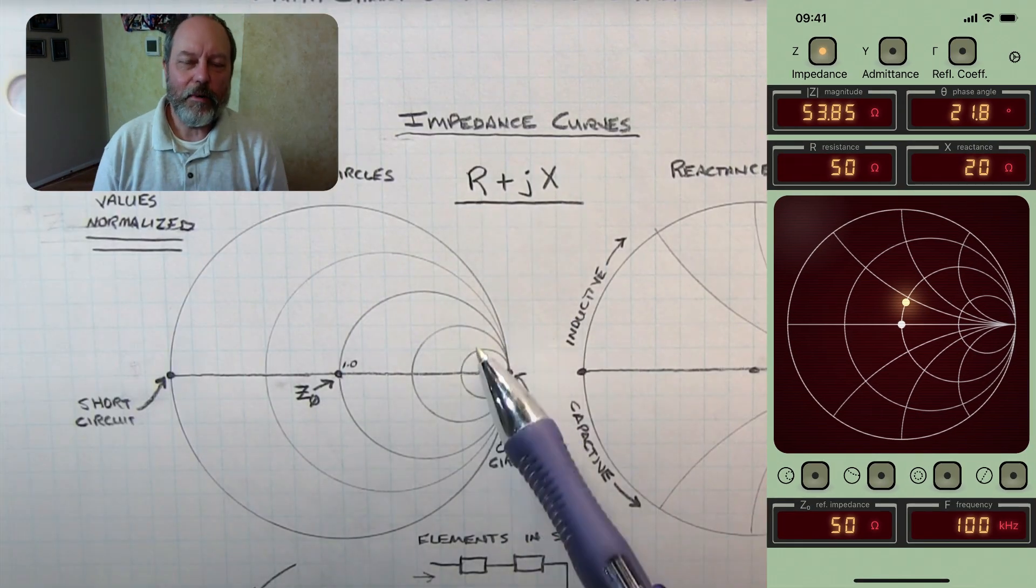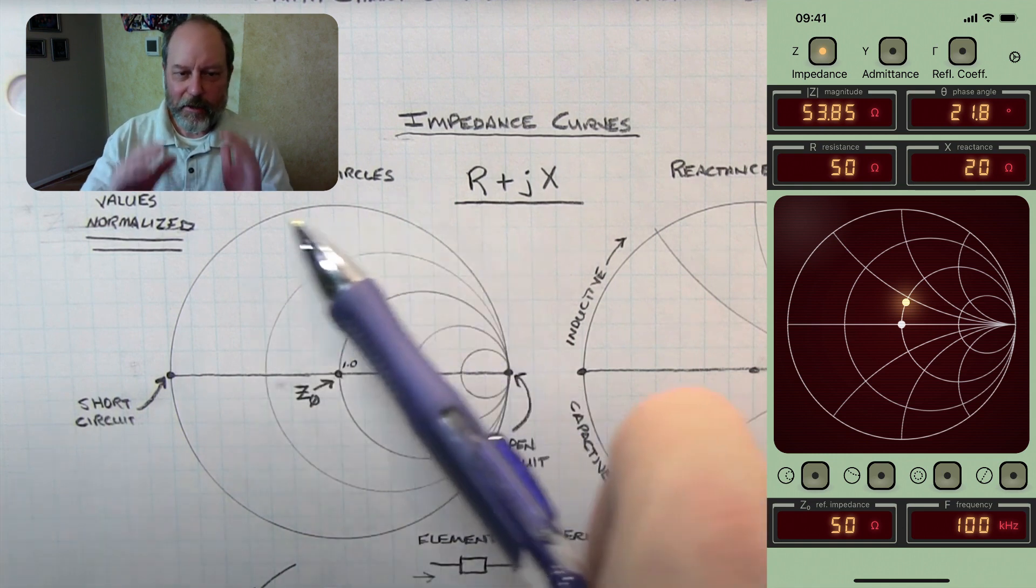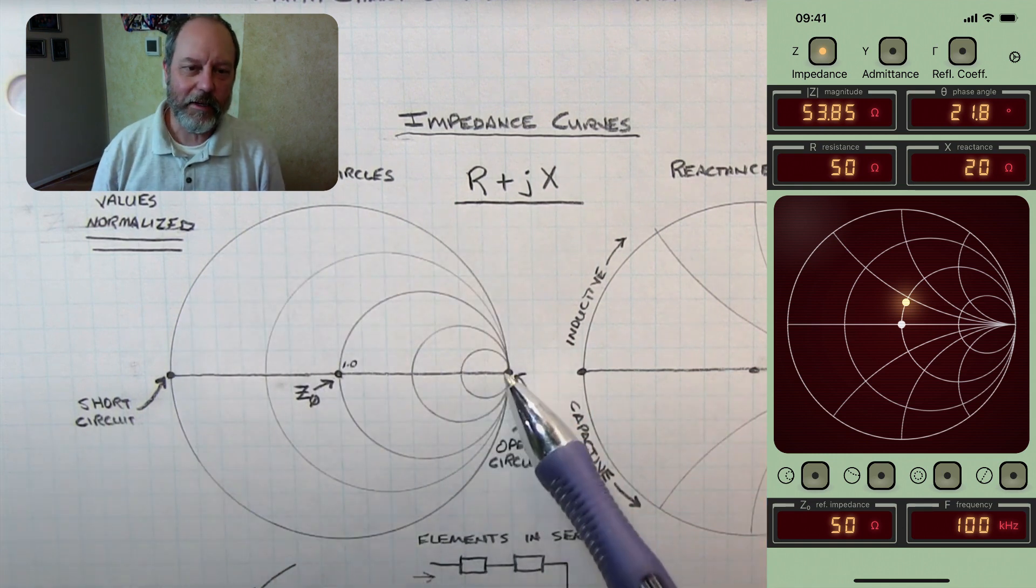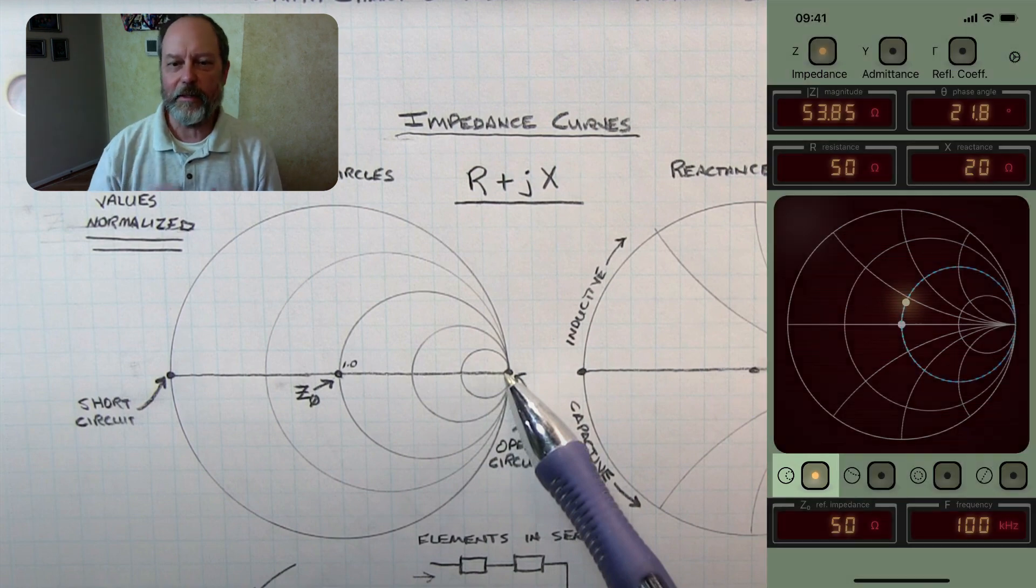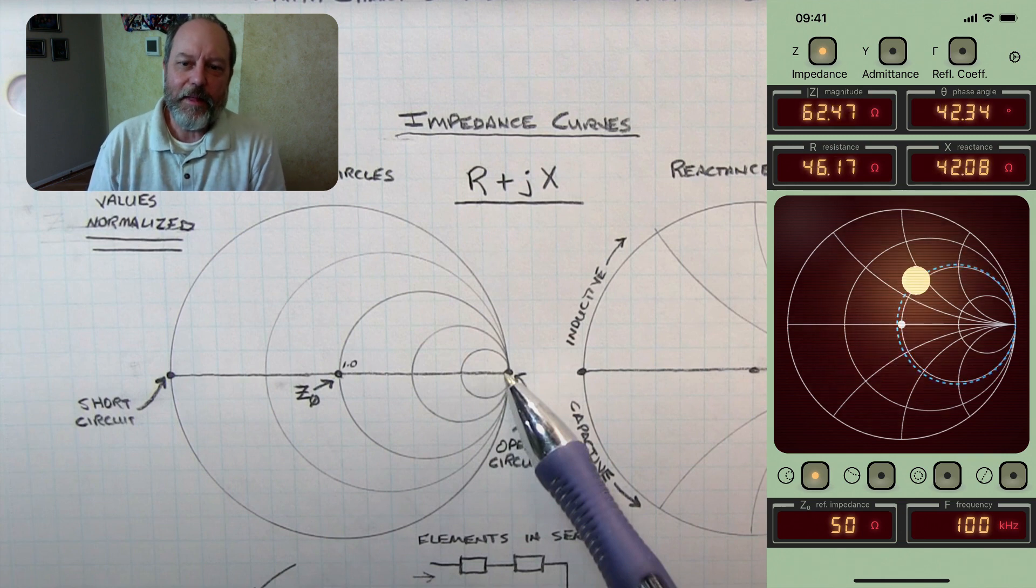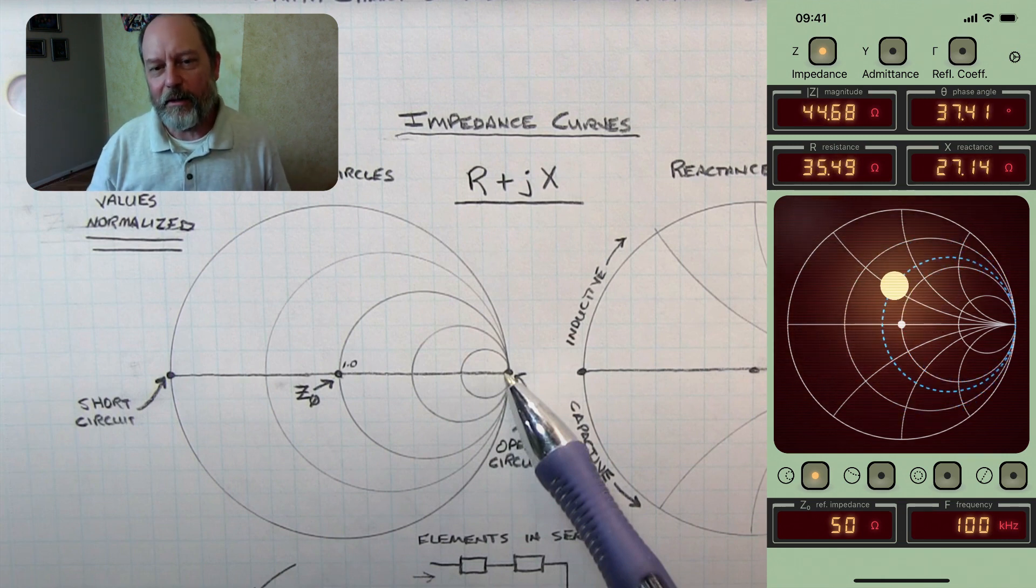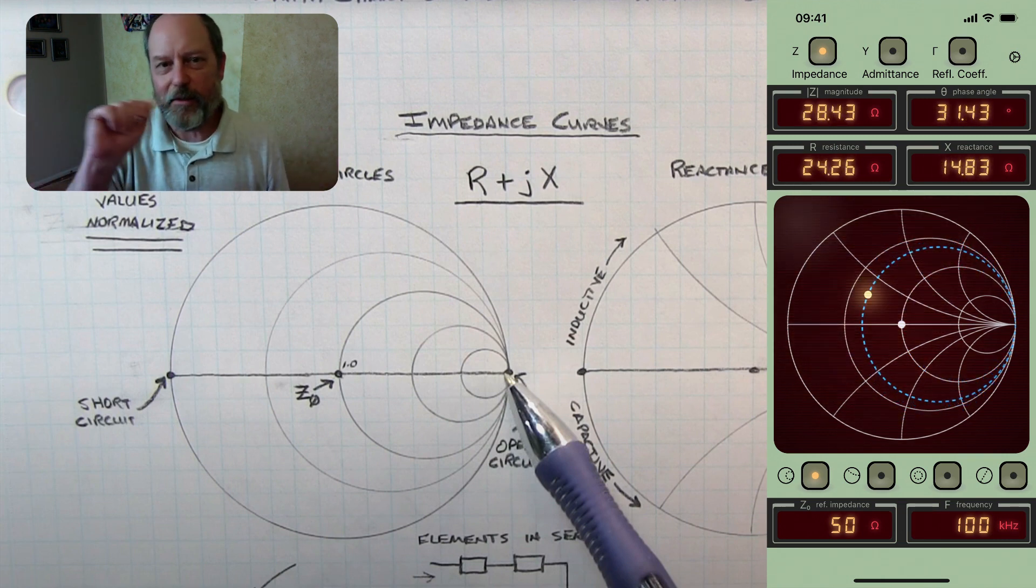So as Alan is showing here, one of the set of curves in the Smith chart are circles of constant resistance. In Impedance Converter you can enable a cursor for a circle of constant resistance by enabling a toggle on the left, and then that cursor is live and follows you as you drag the impedance around the Smith chart.